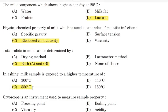In ashing, milk sample is exposed to a higher temperature of — Correct answer: Option C — 550 degrees Celsius. Cryoscope is an instrument used to measure which sample property?